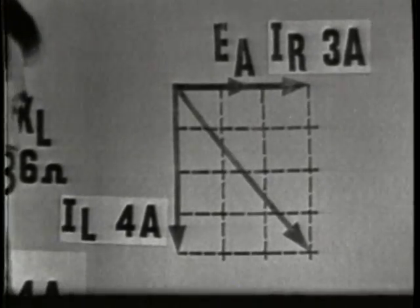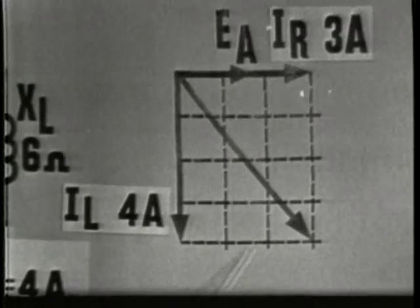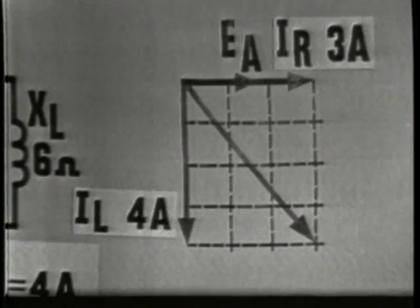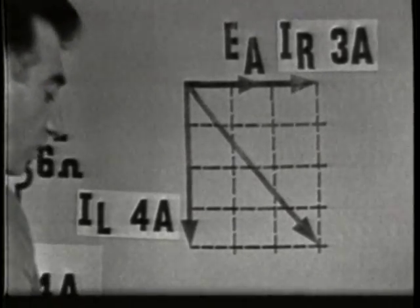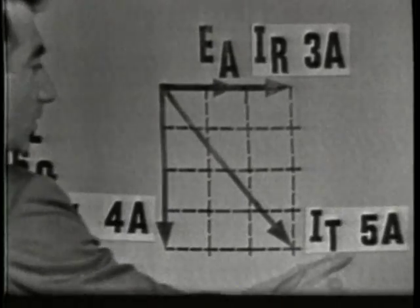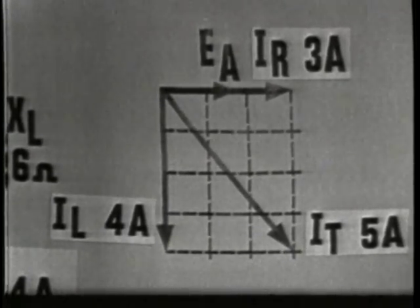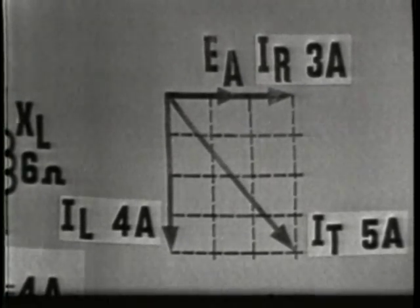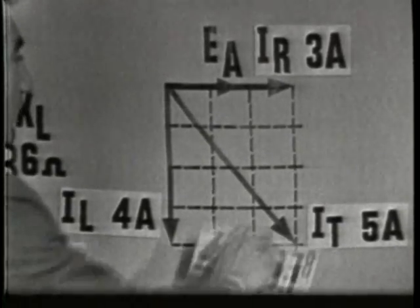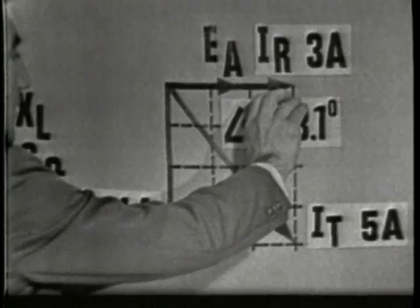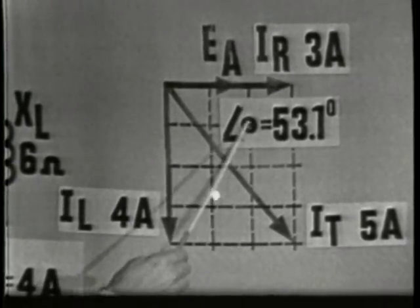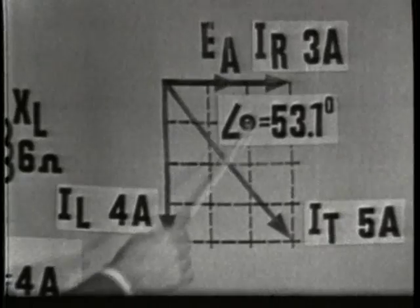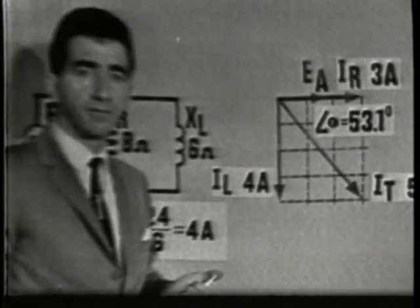The total current may be found by simply measuring the resultant vector when we draw a parallelogram. Draw the parallelogram and measure the resultant vector. In this case, we would find it to be 5 units long, so IT, the total current, equals 5 amperes. Angle theta may be found by measuring the angle between EA and IT. In this case, if we measure the angle, we would find it to be 53.1 degrees. Since this is an inductive circuit, angle theta is a negative phase angle, or negative 53 degrees.